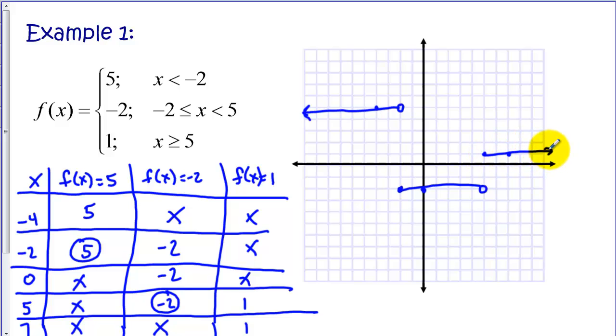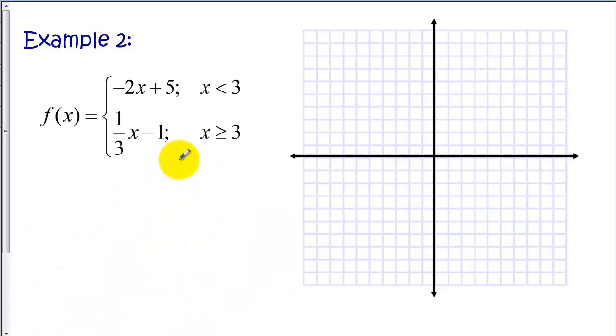So again, it's fairly easy to graph when we have the step functions. We've got three segments here. We'll have a segment for each of the rules. Now let's look at another example.